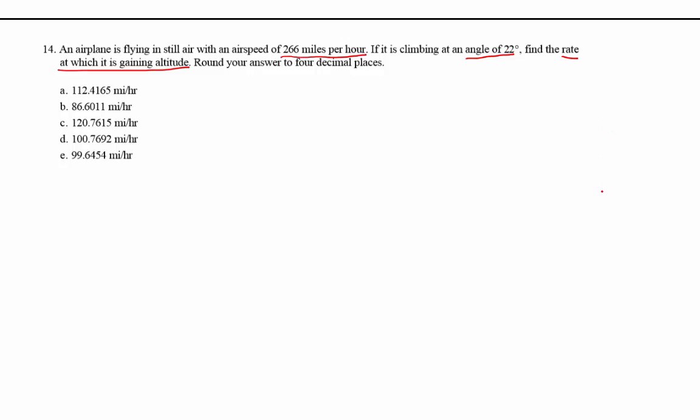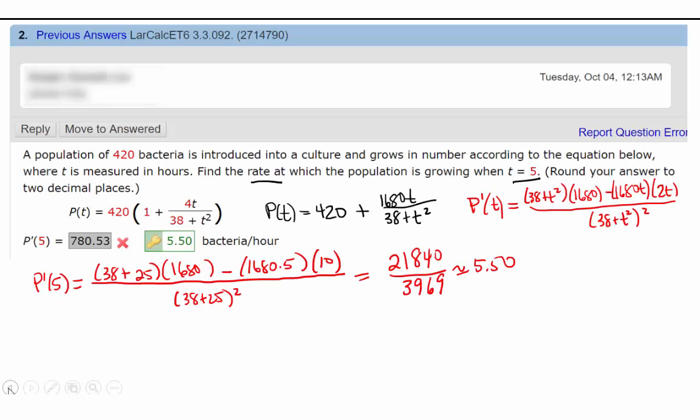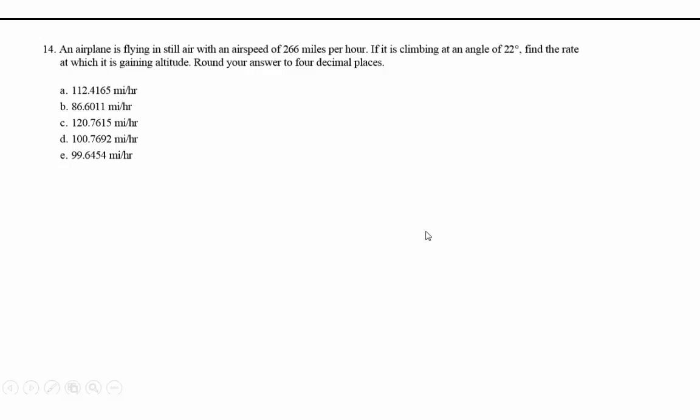Hi, I'm Ms. Hearn. Let's get started. All right, an airplane is flying in still air with an airspeed of 266 miles per hour.